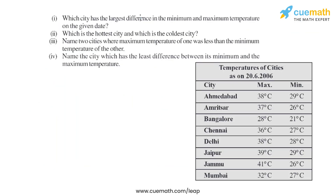Now let us discuss the four sub-parts: which city has the largest difference in minimum and maximum temperature? Which is the hottest city and which is the coldest city? Name two cities where the maximum temperature of one was less than the minimum temperature of the other. Name the city which has the least difference between its minimum and maximum temperature.